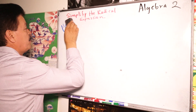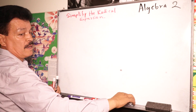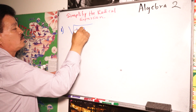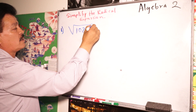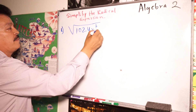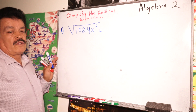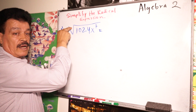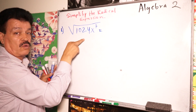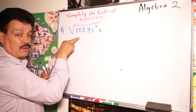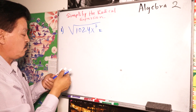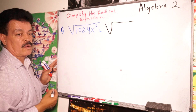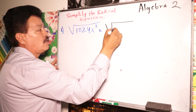Let's follow the same steps for problem B: simplify the square root of 1024 x to the 7th power. First step — identify the index. The index is 2, so this is a square root. Next, factor the radicand.